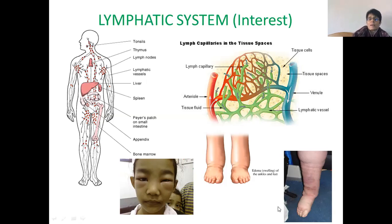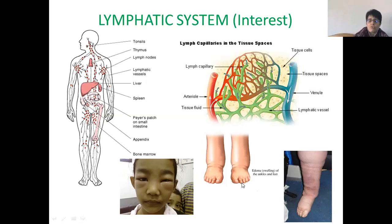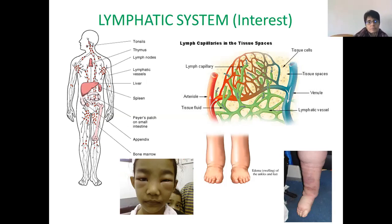Another way lymph drainage becomes blocked is when a parasite actually blocks the lymph vessels — for example, in the legs. If you've watched those body bizarre programs, they sometimes show people with really, really huge legs. It's because of a parasite that actually lives in the lymph vessels and blocks them. Then they get so much fluid build-up in the lower limbs, and sometimes they even have to have operations to try and get rid of it. So that's the lymphatic system.